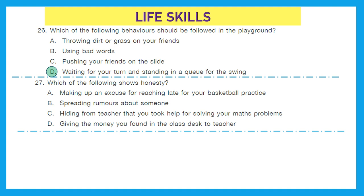Question 27: Which of the following shows honesty? Honesty means truthfulness. Making up an excuse for reaching late to basketball practice — that's a lie. Spreading rumors — again a lie. Hiding from the teacher that you took help with maths — again a lie. Giving money you found in the class desk to the teacher — here one is being honest, not hiding or lying about anything. Option D is the right answer.